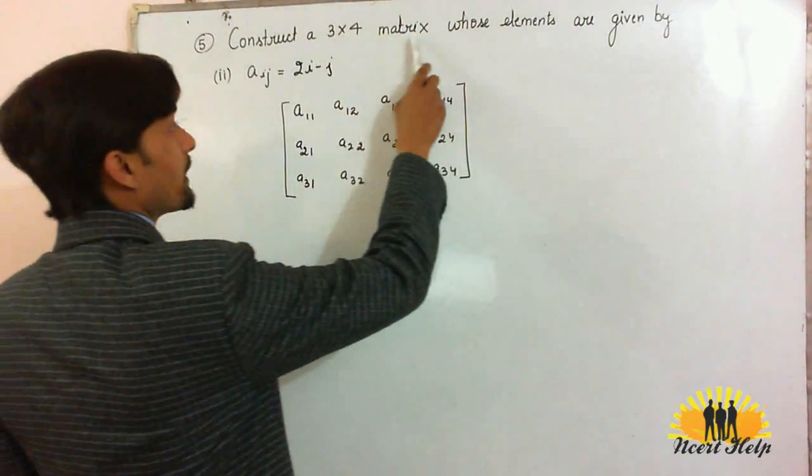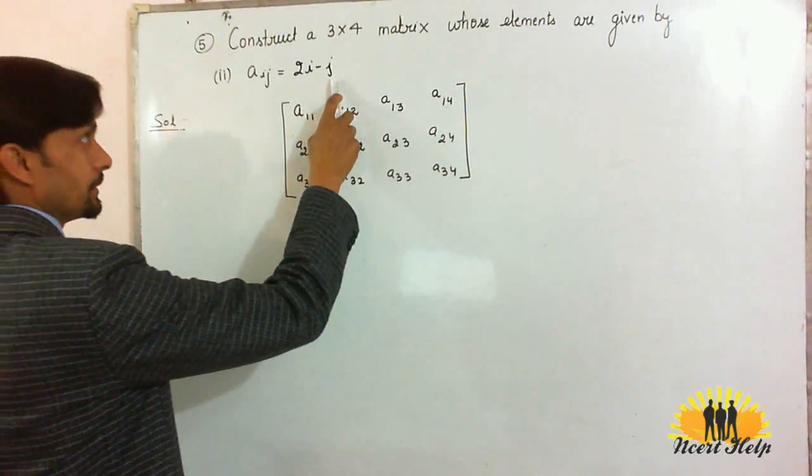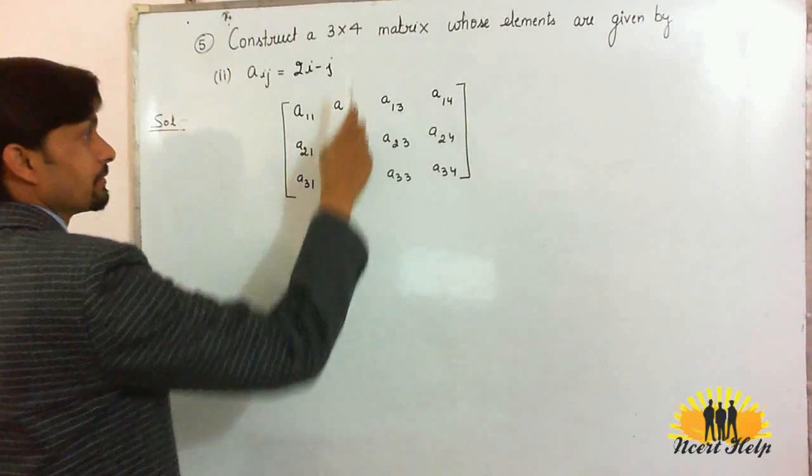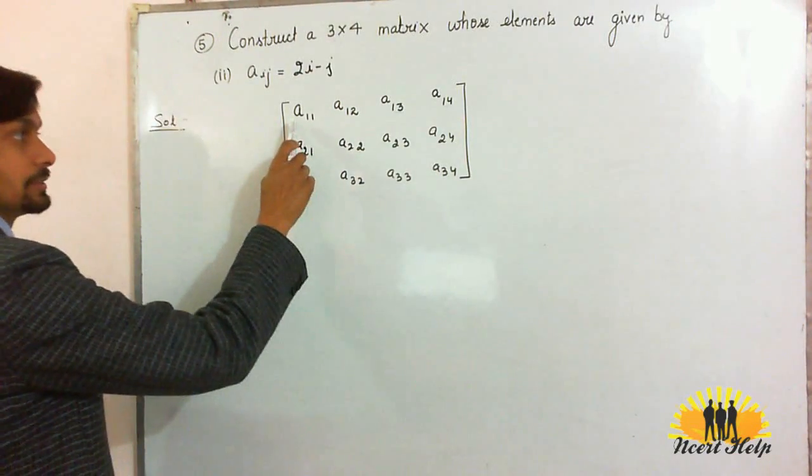Construct a 3 cross 4 matrix whose elements are given by Aij is equal to 2i minus j. In the matrix there will be 12 elements from A11 to A34.